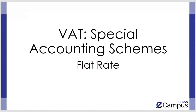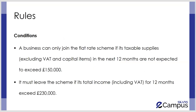Here comes another scheme called the Flat Rate Scheme. The conditions which will enable a business to be part of the Flat Rate Scheme: it can only be joined if a business expects that their taxable turnover — excluding VAT and all capital items — in the next 12 months is not going to be more than £150,000.